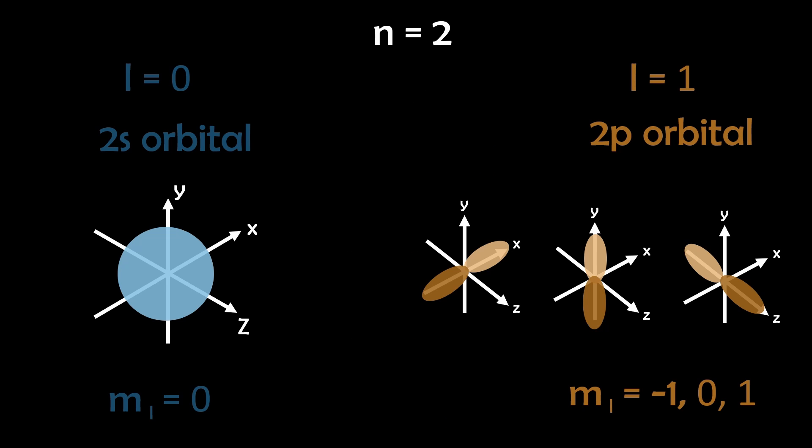Moving up to n equals two, we have two types of orbitals: the 2s where L equals zero, and 2p where L equals one. The 2s orbital, similar to the 1s orbital, has a spherical shape. But the 2p orbitals are more complex, with M sub L values of negative one, zero, and one, each capable of hosting two electrons.